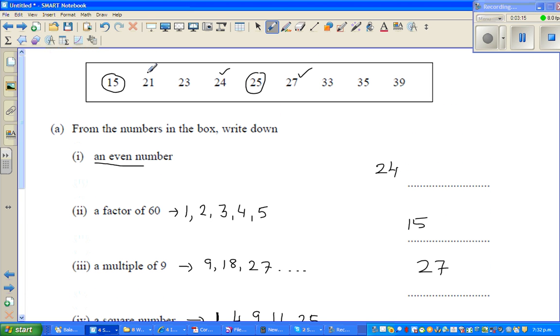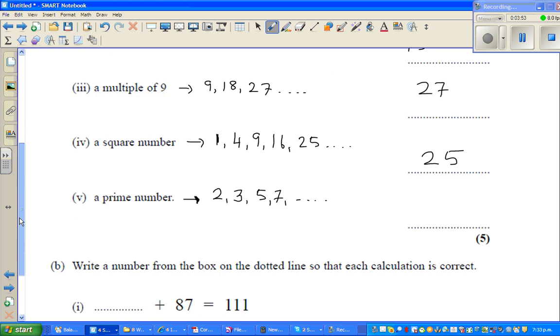So 21 is not prime because it's divisible by 3 and 7. 23, yes, 23 is a prime number. 24 is not prime - all even numbers except 2 are not prime numbers. That's one distinct feature - all prime numbers except 2 are odd numbers. So 23 is the only number which is divisible by 1 and 23, so the prime number in this group is only 23.